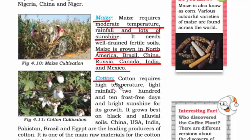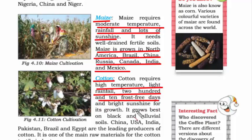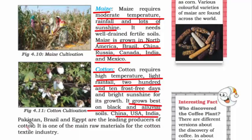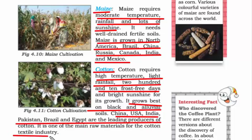Cotton requires high temperature, light rainfall, and 210 frost-free days. It grows best on black and alluvial soil. China, USA, India, Pakistan, Brazil, and Egypt are the leading producers of cotton. It is one of the main raw materials for the cotton textile industry.